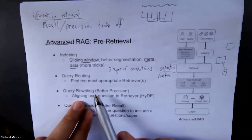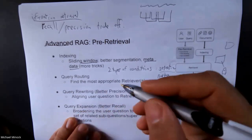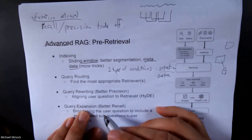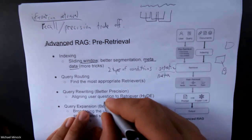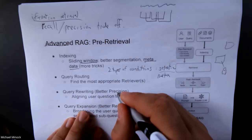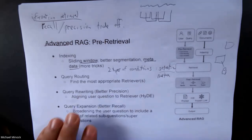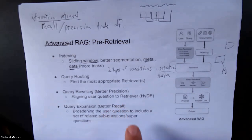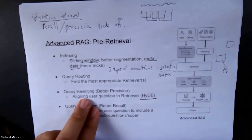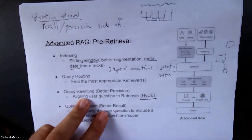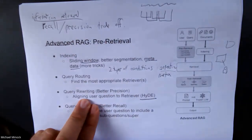Query rewriting and expansion tend to get muddled together, but let's stipulate: query rewriting is about trying to get better precision, while query expansion is about trying to get better recall. Let's talk about a technique called HyDE — hypothetical document embedding — which is aimed at getting better precision when doing the semantic match.